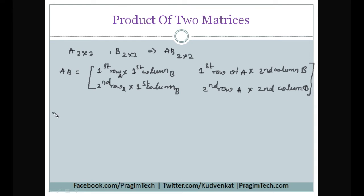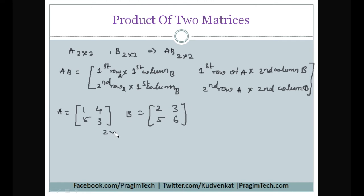Let us understand this with a simple example. We have matrix A as [1, 4; 5, 3] and matrix B as [2, 3; 5, 6]. Both are 2 by 2, so multiplication is possible. To obtain AB, first consider the first row of A, which is 1 and 4, and multiply it with the first column of B, which is 2 and 5. So we get 1×2 + 4×5.